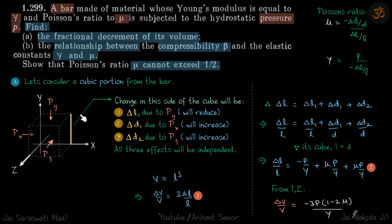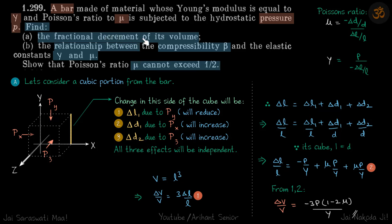Similarly, due to pz from the front and back, this length will again increase, and we call that delta d2. All three effects are independent of each other. So delta l1 is a direct compressive strain, while delta d1 and delta d2 are lateral strains, for which we will use Poisson's ratio.